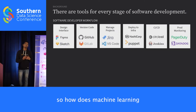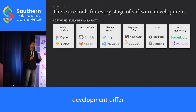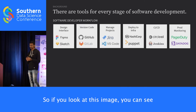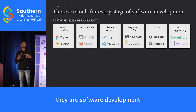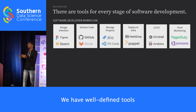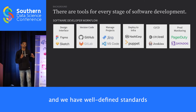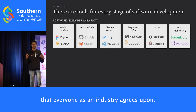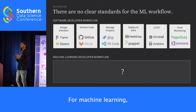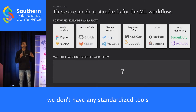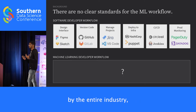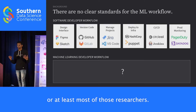How does machine learning development differ from traditional software engineering? For software development, at every stage we have well-defined tools and well-defined standards that everyone in the industry agrees upon. But that's not the case for machine learning — we don't have any standardized tools or standards commonly agreed upon by the entire industry or most researchers.